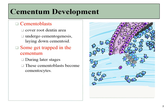This cementum covers the dentin found in the roots. Just like enamel and dentin, cementum is first produced in an immature, not-quite-solid form called cementoid, which gets mineralized a little bit later. Unlike both enamel and dentin, sometimes cementoblasts get trapped within the cementum they're creating and then differentiate into cementocytes. This is more similar to how bone tissue forms.